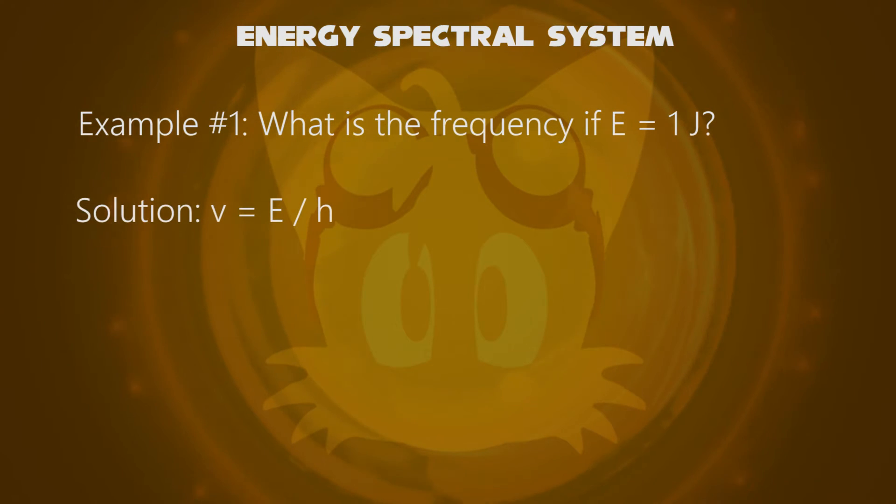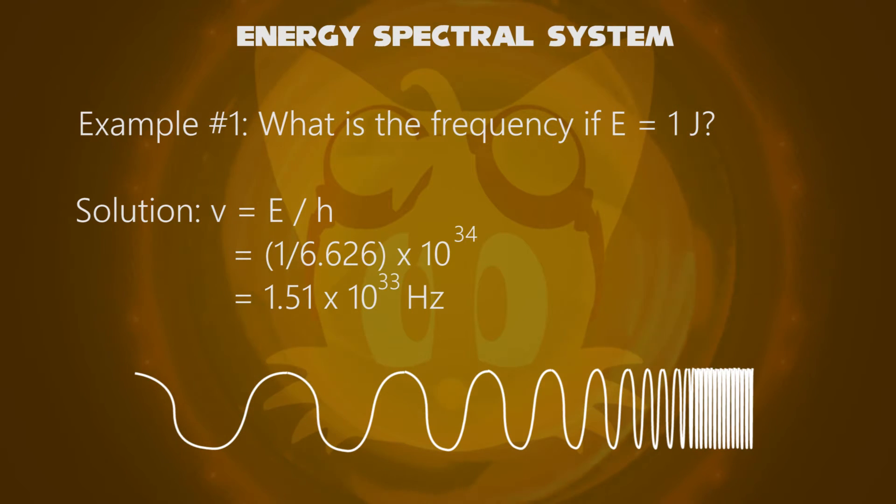Frequency equals energy divided by Planck's constant. The answer is 1.51 times 10 to the 33 hertz, that's the frequency value extremely large we get.